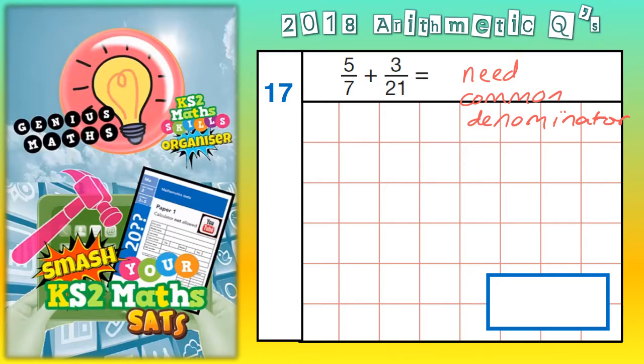Welcome all you Arithmetic Ninjas to question number 17. The first thing I notice here is we've got fractions. We're adding some fractions and they have different denominators. Now you need a common denominator if the denominators are different.